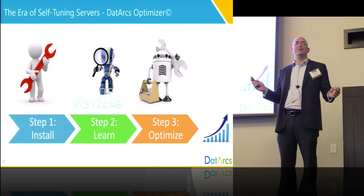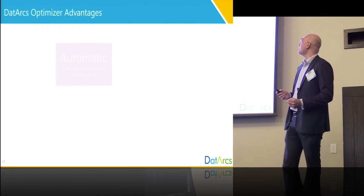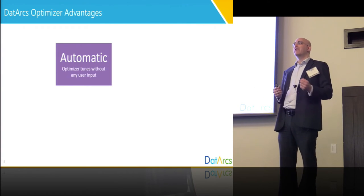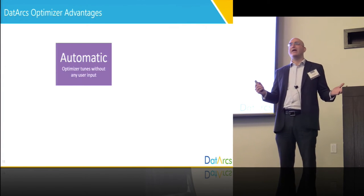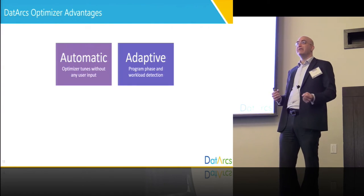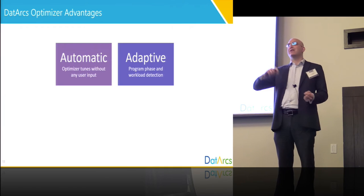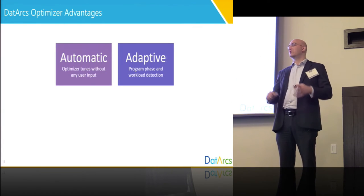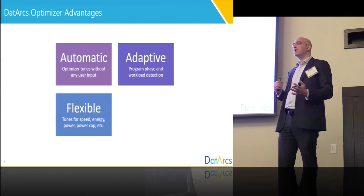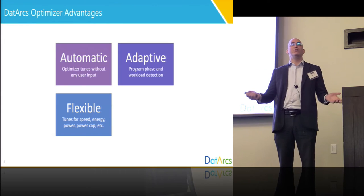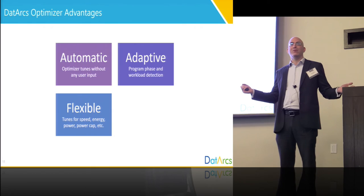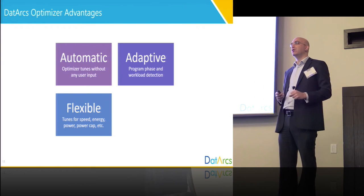The idea was to make it simple for everybody to use. There are four main advantages to this kind of software. First, it's all automatic — it doesn't require any user input and you don't need to be an expert; you install it and that's it. Second, it's adaptive — the workload you're running now is not the workload you'll be running next week, and it also adapts to the different phases of applications. It's flexible in the sense that you might want to optimize for speed, or for energy or power cap — you can define whatever target function you'd like.